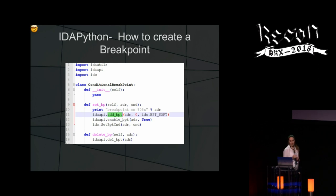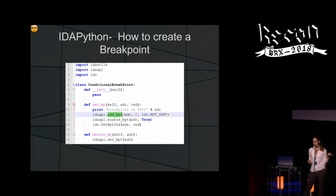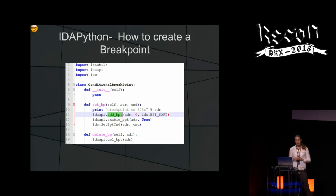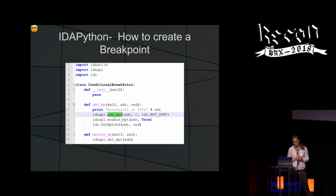I started by learning how to create breakpoints with IDA Python. You can see a few simple functions. The simplest is add_bpt, which adds a breakpoint — you set the address and the type: software breakpoint, hardware breakpoint, page breakpoint, and more. In this case I want a software breakpoint on the code. You also have enable_bpt to enable or disable a breakpoint, and set_bpt_condition to add a condition, which gives much more functionality.